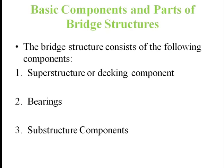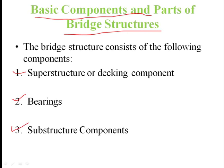Next, what are the basic components and parts of a bridge structure? There are three major components of any type of bridge. First one is superstructure, second one is bearing, and third one is substructure. These are the three important components of a bridge. We will study the detail about the superstructure, bearing and substructure components.